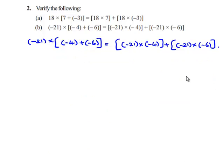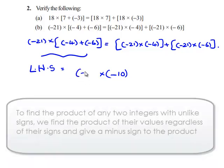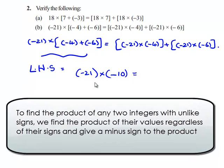First we'll solve the values on the left hand side: negative 21 multiplied by negative 4 plus negative 6. We solve the values lying under the square bracket first, that is negative 4 plus negative 6, which gives negative 10, multiplied by negative 21.